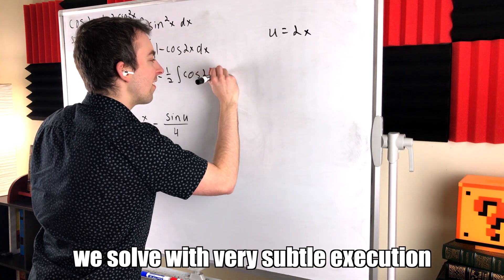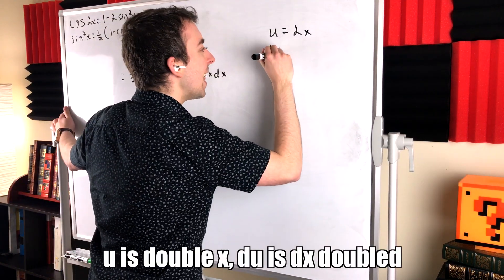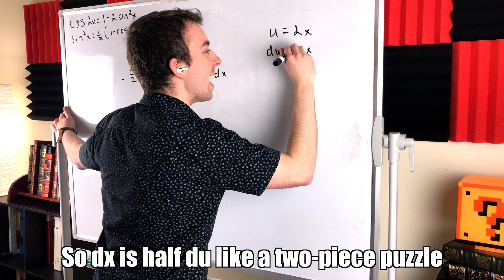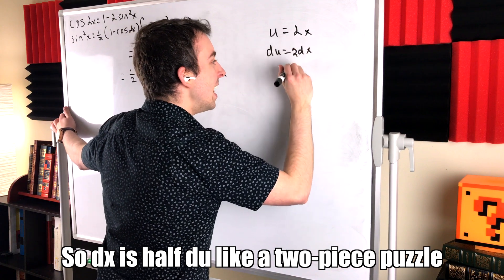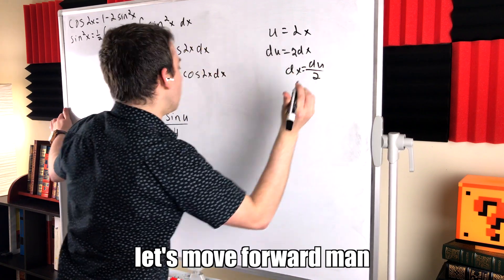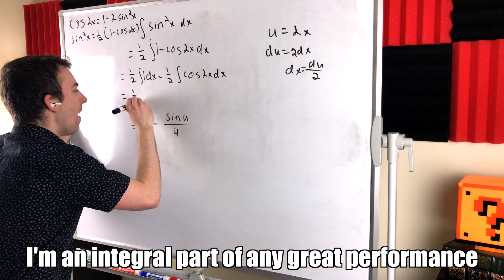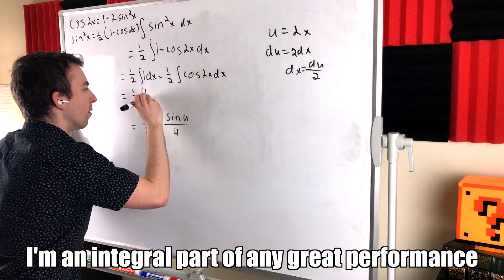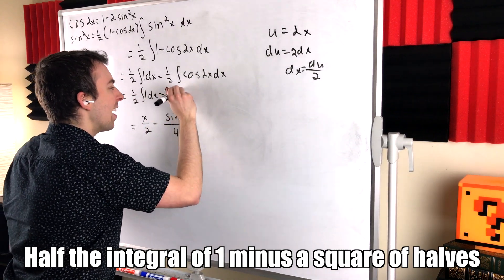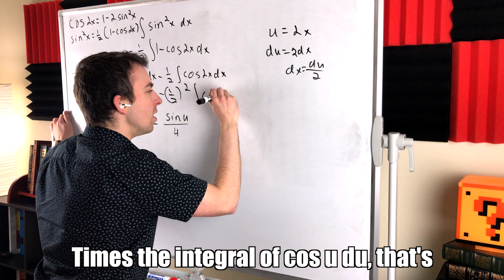We solve with very subtle execution. Variable substitution. U is double x. Du is dx doubled. So dx is half du. Like a two-piece puzzle. Like a rumble in the jungle. I'm an integral part of any great performance. Half the integral of 1 minus the square of halves times the integral of cos u, du.